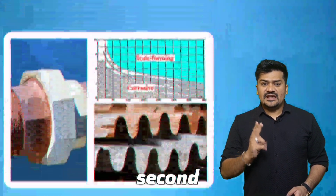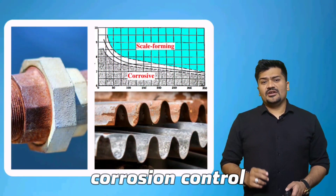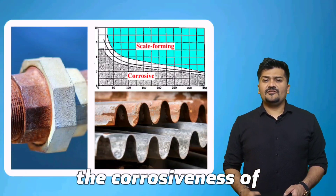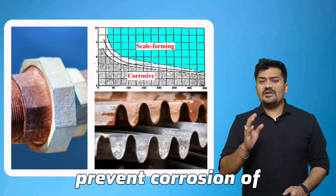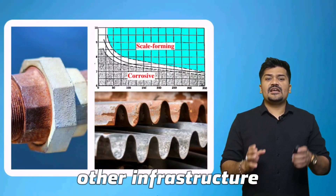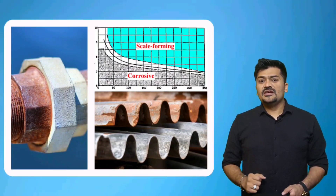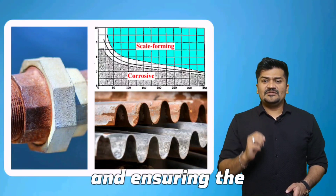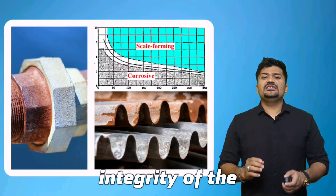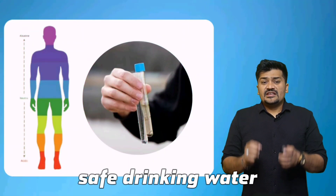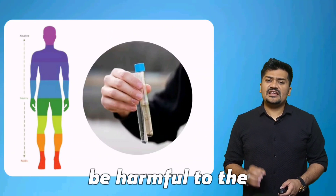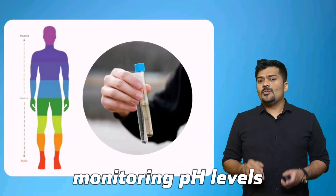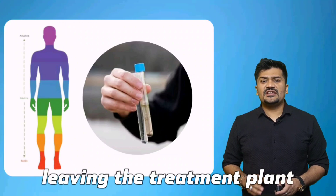Maintaining the correct pH ensures these processes are effective in removing contamination and pathogens from the water. Second, corrosion control: pH levels can affect the corrosiveness of the water. Controlling pH helps prevent corrosion of the pipes, pumps, and other infrastructure components, increasing their lifespan and ensuring the integrity of the distribution system. Third, safe drinking water: water with an extreme pH can be harmful to health.